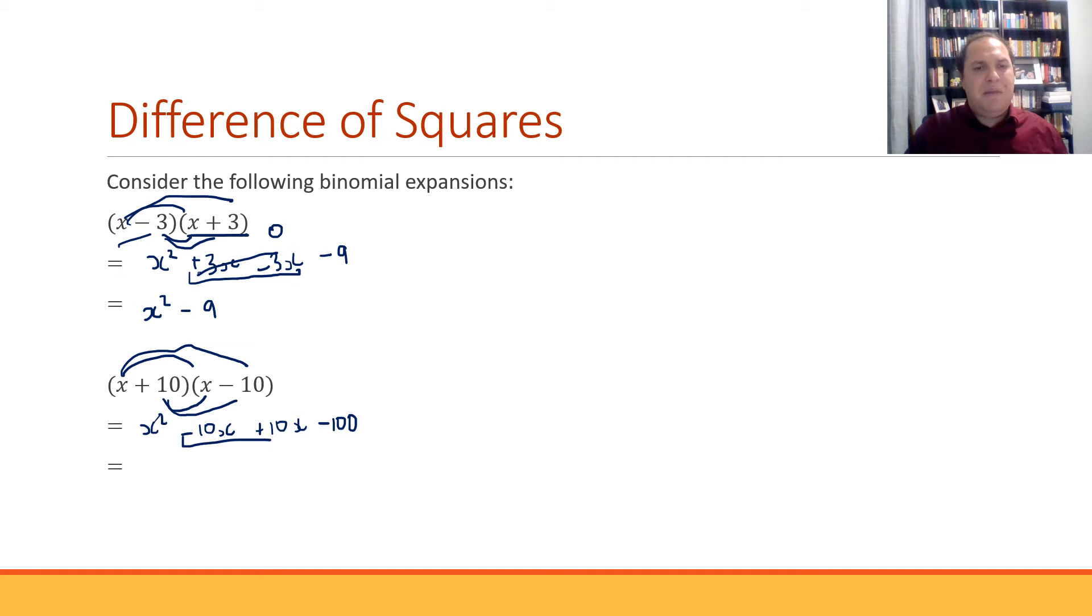Now look in the middle again. We've got negative 10x and positive 10x. They're both going to cancel each other out too. So we're left with x squared minus 100.